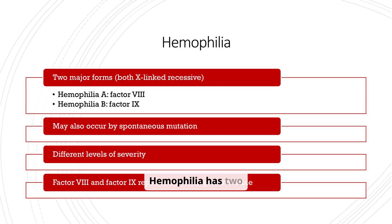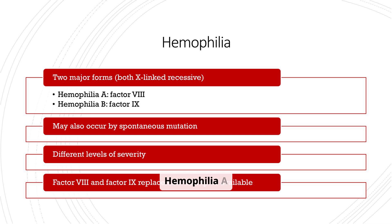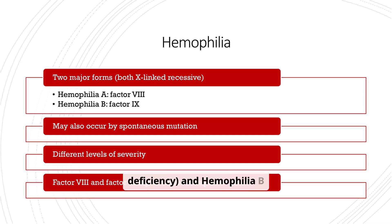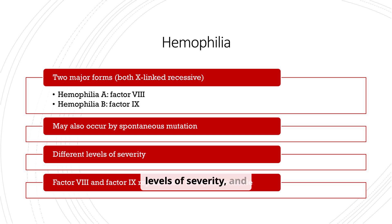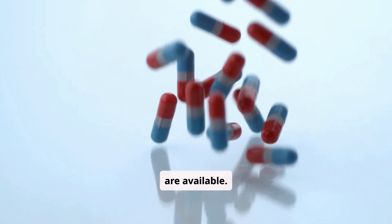Hemophilia has two major forms, both X-linked recessive: hemophilia A (factor VIII deficiency) and hemophilia B (factor IX deficiency). It may also occur by spontaneous mutation. There are different levels of severity, and factor VIII and factor IX replacement therapies are available.